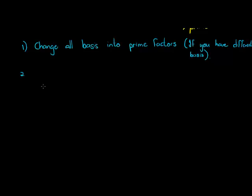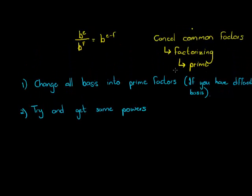The second tip is to try and get same powers. The whole idea is you want to cancel common factors, so you want something in the numerator to cancel with something in the denominator — a base with exponent in the numerator matching one in the denominator. So if I change all the bases into prime factors, and one is 10 to the power of something and the denominator has 6 to the power of something, I'll change the 10 and the 6 into prime factors.